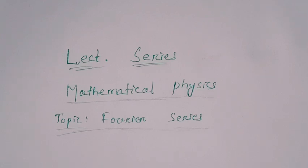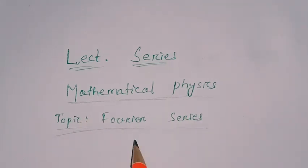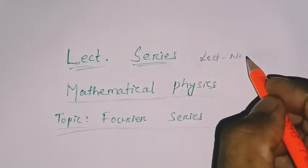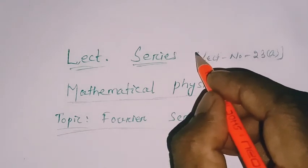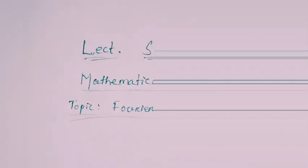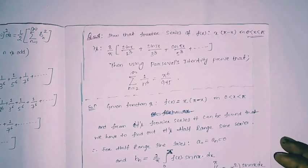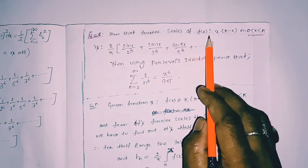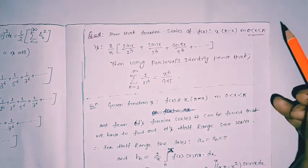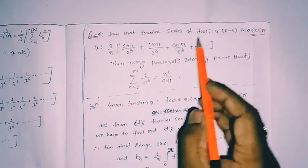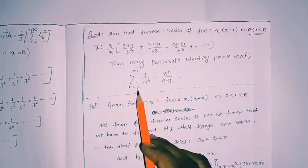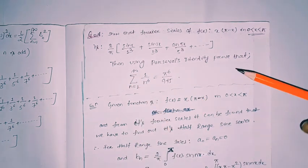Good morning, welcome to our lecture series on mathematical physics. We are discussing Fourier series — this is lecture number 23a. In this lecture we are going to discuss an important question related to Parseval's identity. The given function is x(π - x) on [0, π]. First we find the Fourier series of this function, then using Parseval's identity we prove that the summation from n=1 to infinity of 1/n⁶ equals π⁶/945.